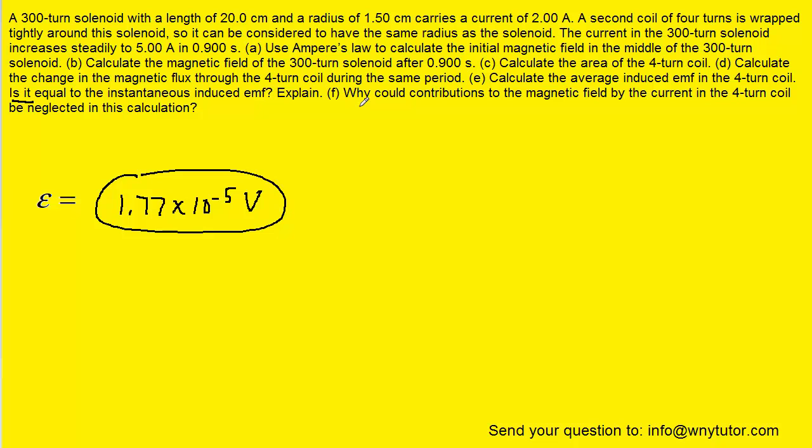Finally, on to part F, which asks why could contributions to the magnetic field by the current in the four-turn coil be neglected in this calculation? We'll notice that the induced EMF in the four-turn coil is very small. It's on the order of 10 to the negative 5 volts. Because of that small value of induced EMF, the induced current will also be a very small value.